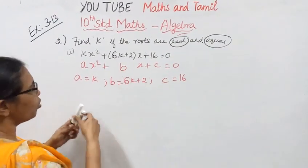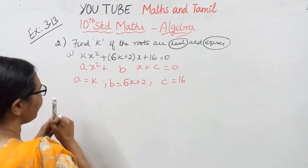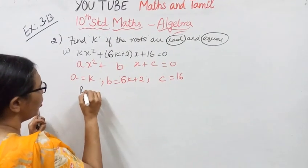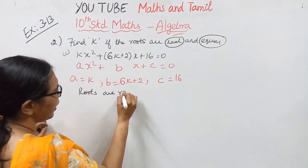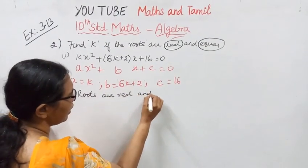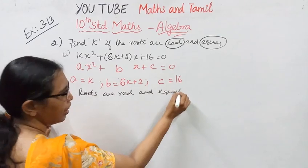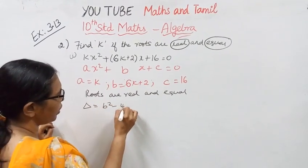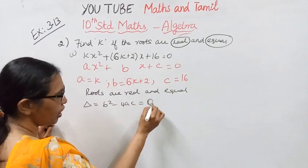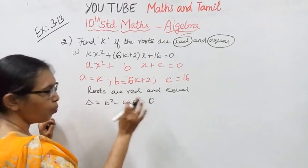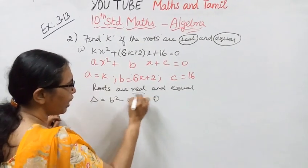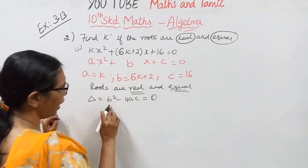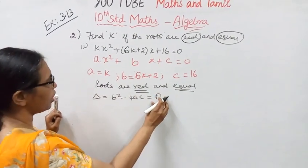Now the roots are real and equal. How do we get roots that are real and equal? The discriminant Δ = b² - 4ac must equal 0. So what am I going to do? For real and equal roots, b² - 4ac = 0.